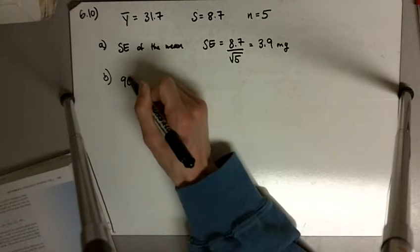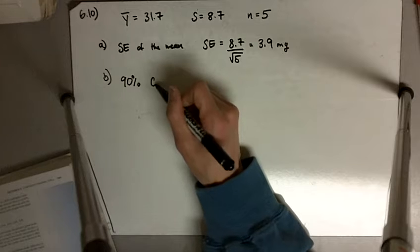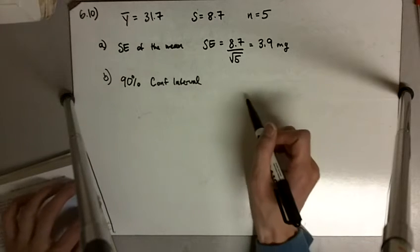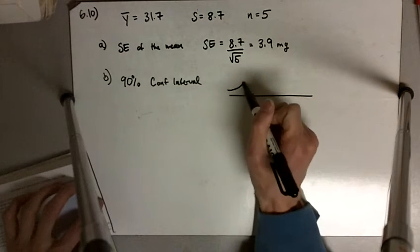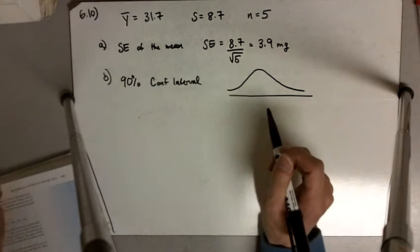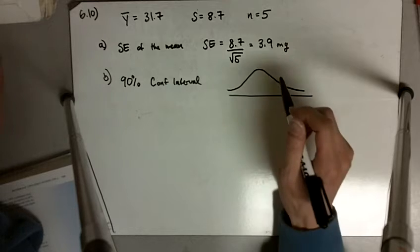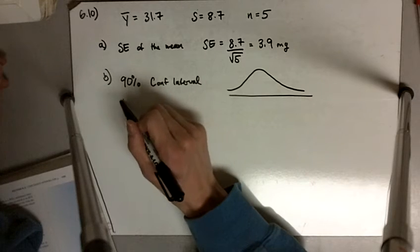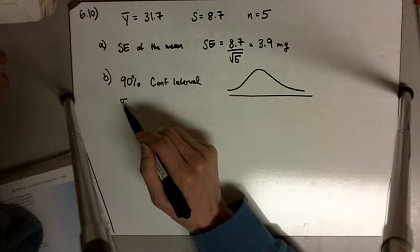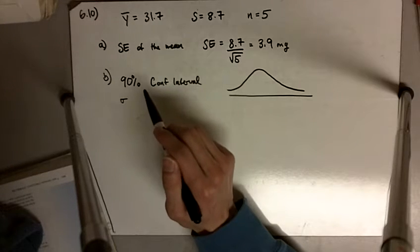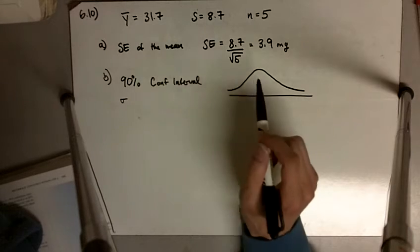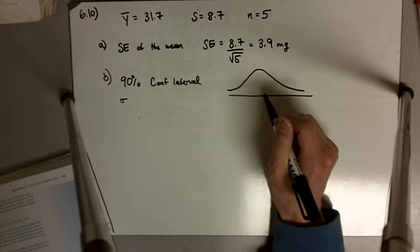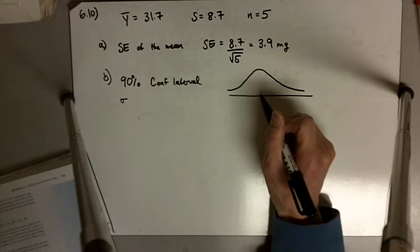Part B says construct a 90% confidence interval. The 90% confidence interval means we use the t-distribution. Remember, when creating confidence intervals, we use the t-distribution because we don't know sigma — the standard deviation of the population. We don't know that exact quantity, so we use s as an estimate. In order to account for the difference, because it is an estimate, we use the t-distribution.